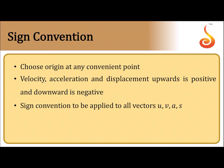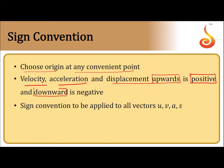What are the sign conventions to be followed while dealing with motion under gravity? Here are the rules. First, choose the origin at any convenient point. Second, velocity, acceleration, and displacement taken in the upward direction are treated as positive, and anything in the downward direction is taken with a negative sign. This sign convention applies to all vectors: initial velocity, final velocity, acceleration, and displacement.